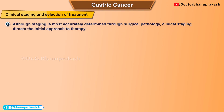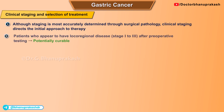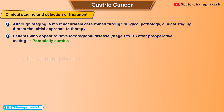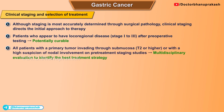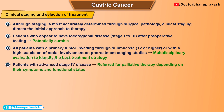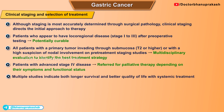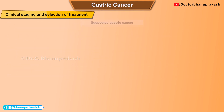Although staging is most accurately determined through surgical pathology, clinical staging directs the initial approach to therapy. Patients who appear to have local-regional disease (stage 1 to 3) after pre-operative testing are potentially curable. Patients with a primary tumor invading through the submucosa (T2 or higher) with high suspicion of nodal involvement should be referred for multidisciplinary evaluation. Patients with advanced stage 4 disease are usually referred for palliative therapy; multiple studies indicate both longer survival and better quality of life with systemic treatment.